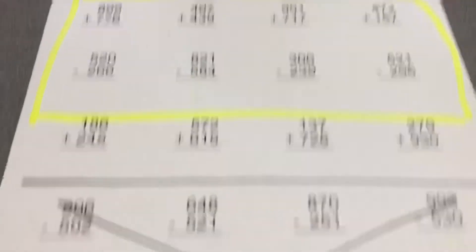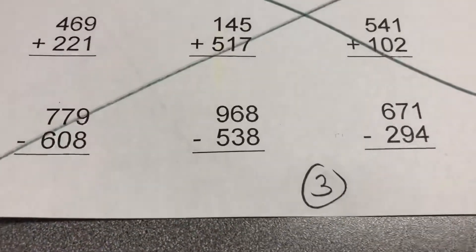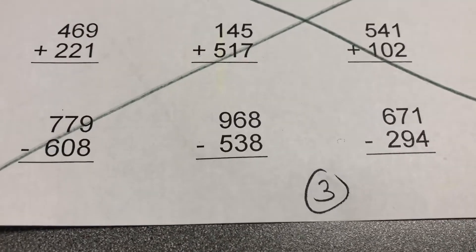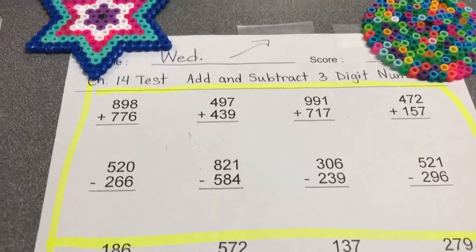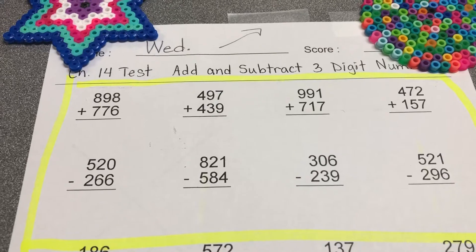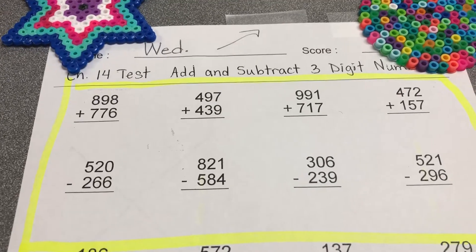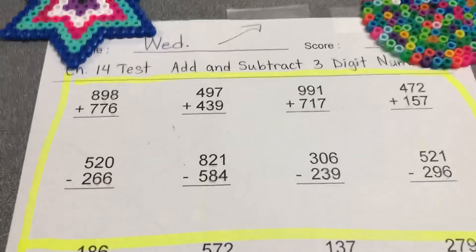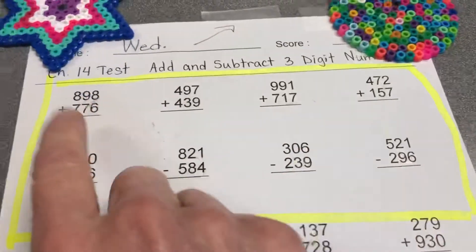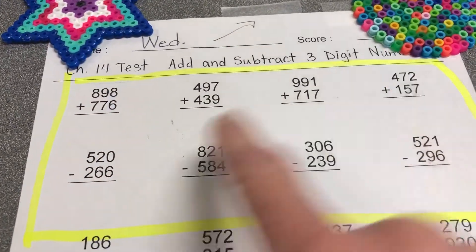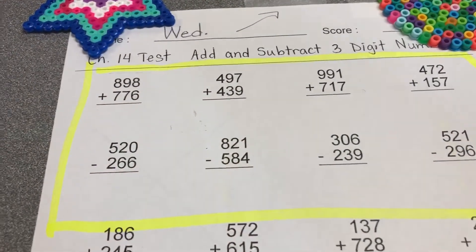I'm looking at page 3 in our math assignment and I'm asking you just to do the first 8. Just do the first 8 and it's got addition and subtraction mixed. So, 4 addition and 4 subtraction.